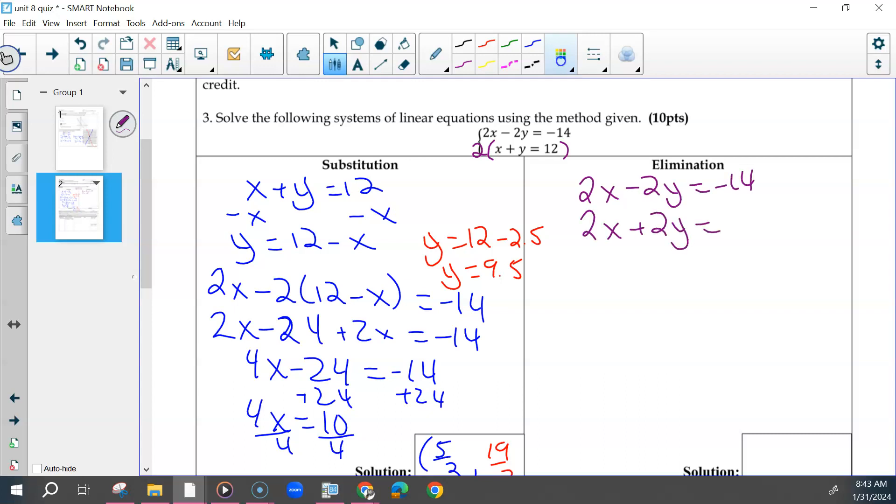Some of the issues that I saw here was when we brought down this one, we changed this to a negative, so that when we added or subtracted them, both cancelled. And that should not have happened. So this would be negative 2 minus 2y, which is negative 4y. And then negative 14 minus 14 is negative 28.